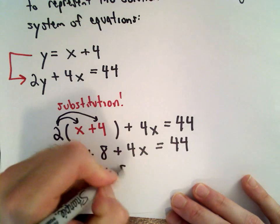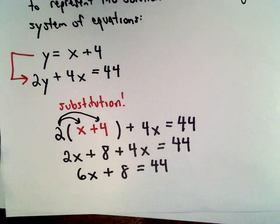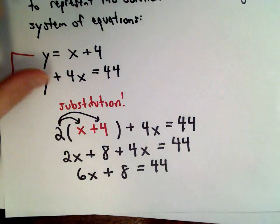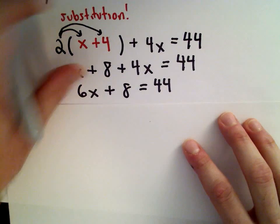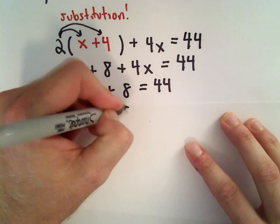Plus 8 equals 44. The goal here is to solve for x, so I want to get the term involving x all by itself. To do that, I'm going to subtract 8 from both sides.